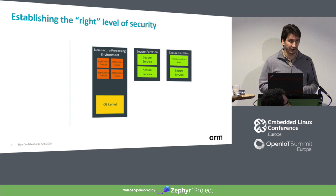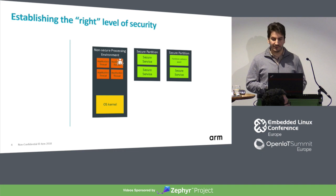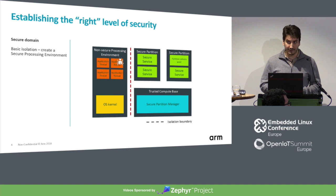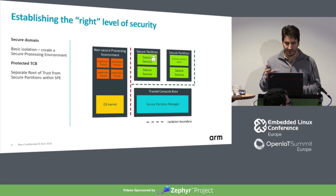Let's talk about establishing the right level of security. The most basic issue is that if there is some vulnerability in the business code, you may want to separate security-aware aspects of the system, creating a secure processing environment for them. For some threat models and some IoT devices, this is sufficient isolation, but in other cases you want to mitigate vulnerabilities in one of your secure partitions by isolating a trusted compute base — separating trusted and secure components from each other and protecting the root of trust.